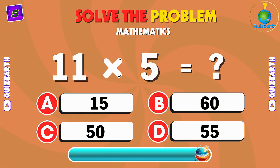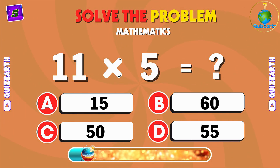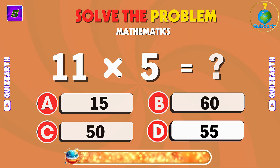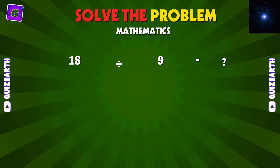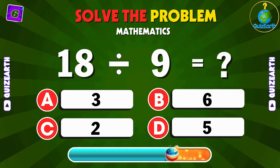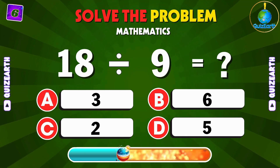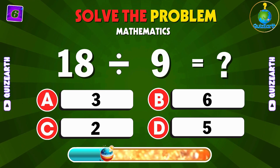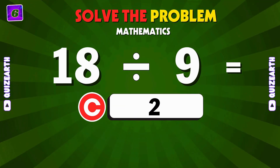Multiply 11 by 5 — show your math skills. D: 55. Divide 18 by 9 — can you solve it fast? C: 2.